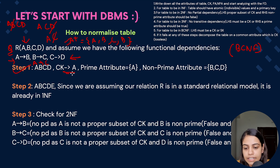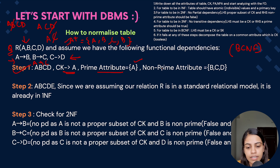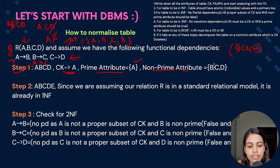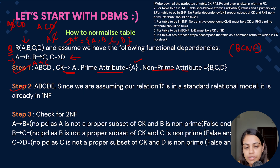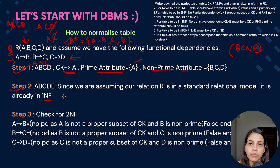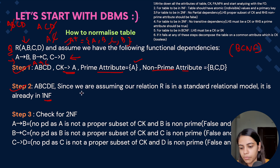So the candidate key is A. Prime attributes are those which are part of the candidate key, so A is the prime attribute. Non-prime attributes are those not part of the candidate key: B, C, D. In step 2, since we have found the candidate key and prime/non-prime attributes, we check for first normal form. Since we assume our relation is in a standard relational model, it is already in 1NF — all values are atomic.